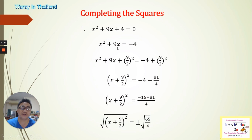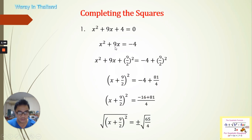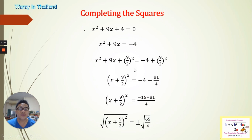Now we know already what a perfect square is. The second step is you will look at the coefficient of the variable x having the power 1, which is 9. So we're going to divide this by 2, and we're going to add that as the third term of our perfect square, and take the power 2 for that. So you will have (9/2)², and this makes a perfect square already. To make it balanced and still equal to the original equation, we need to add the same value, (9/2)², on the right side as well.